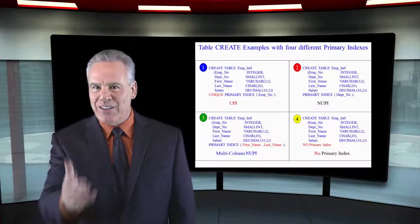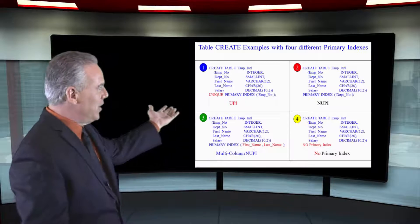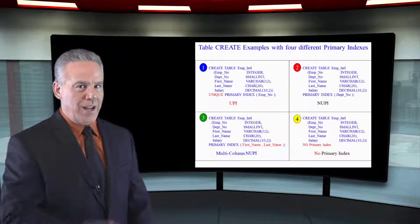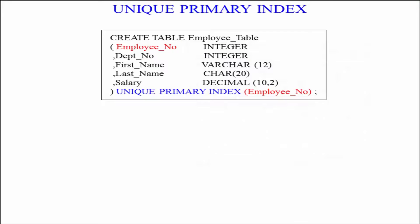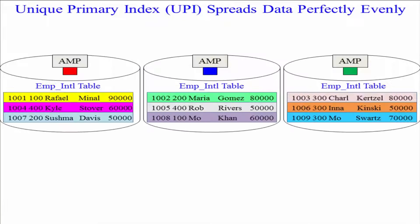Here's another look at this, a second chance. Take a look at these four table create statements. We've got our first one, a unique primary index. The distribution is going to be perfect every single time.